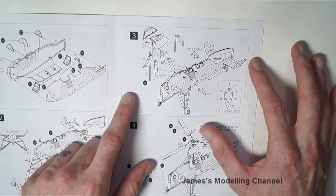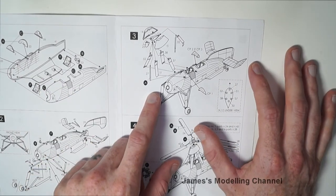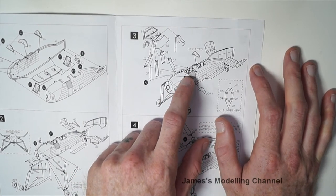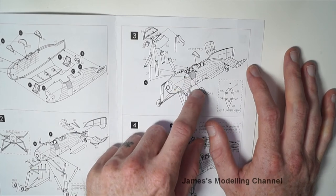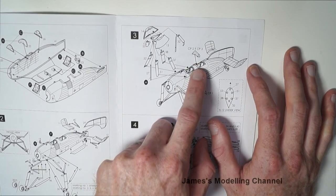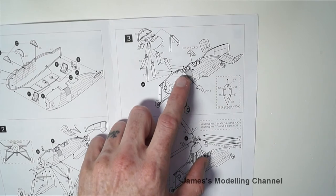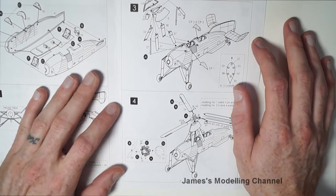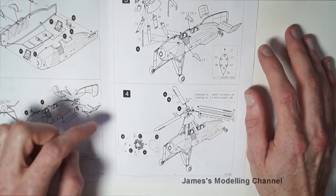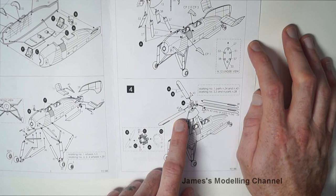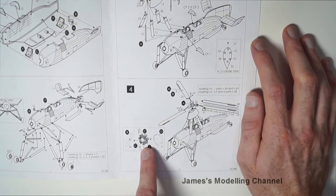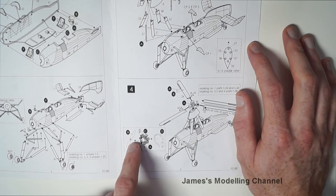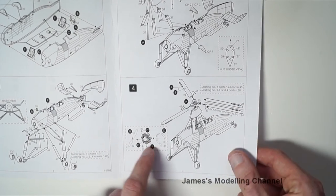Step three is adding the auto gyro parts on top of the front cockpit section here, and also adding the clear parts to the visors. And then step four is adding the auto gyro blades and the engine as a sub-assembly - build the engine first, and then placing it afterwards.